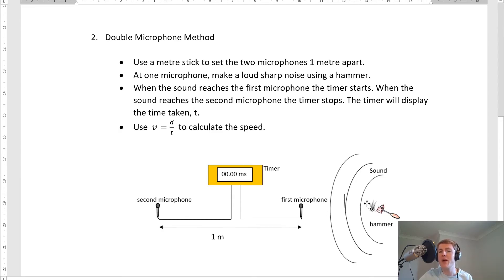Both microphones are connected to a timer. What happens is when that loud sharp noise is made at the first microphone, that switches on the timer, and it times how long it then takes the sound to go from the first microphone all the way to the second microphone, at which point the timer will stop. The timer then displays the reading for how long it took the sound to travel from the first to the second microphone. That means we then have our distance of one metre and our time on the timer, which means we could then use speed equals distance divided by time to calculate the speed.